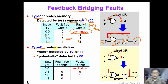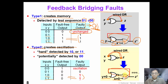Type 2 feedback bridging fault creates oscillation. For example, consider a feedback bridging fault between X and Z using a wire-OR fault model. Suppose we apply 00 and 11 to this circuit — the output would be 1, and we can detect the fault. This is called a hard detection. However, if we apply 00 to this circuit, it becomes an oscillation feedback ring, and the output will oscillate: 0, 1, 0, 1... So we may or may not detect the fault using pattern 00 — we call this a potential detection.